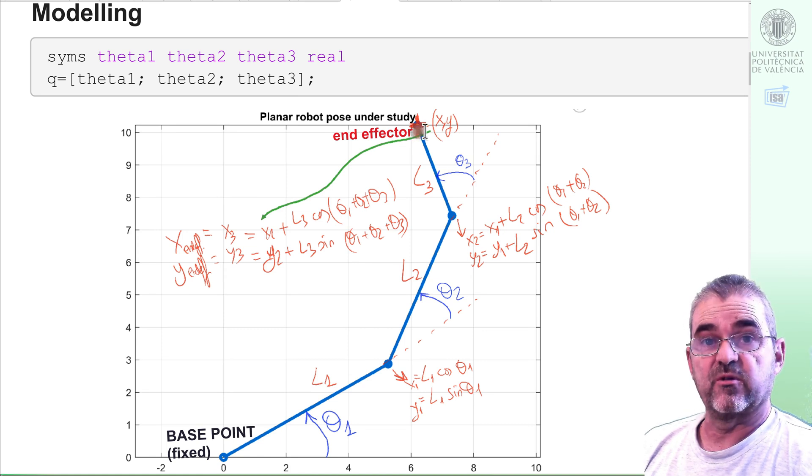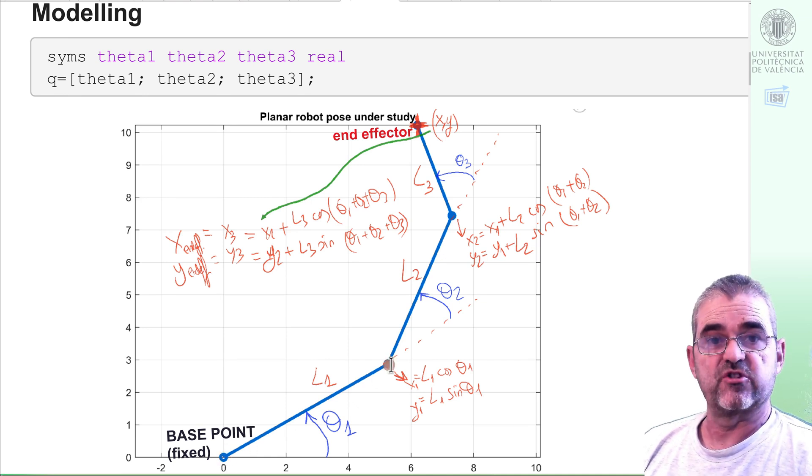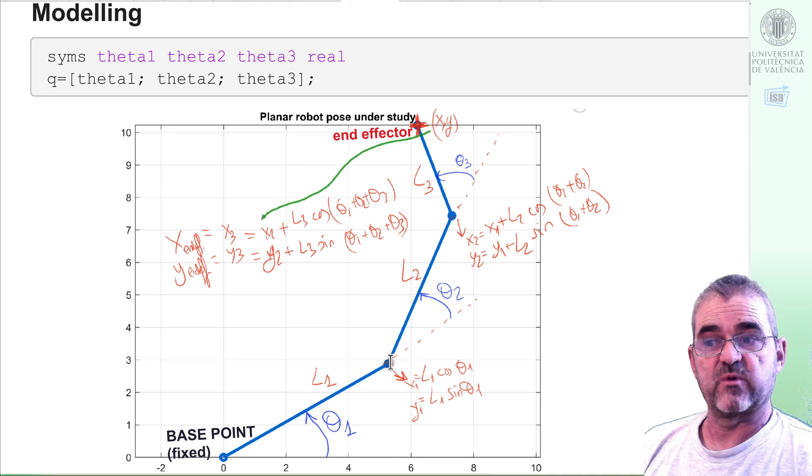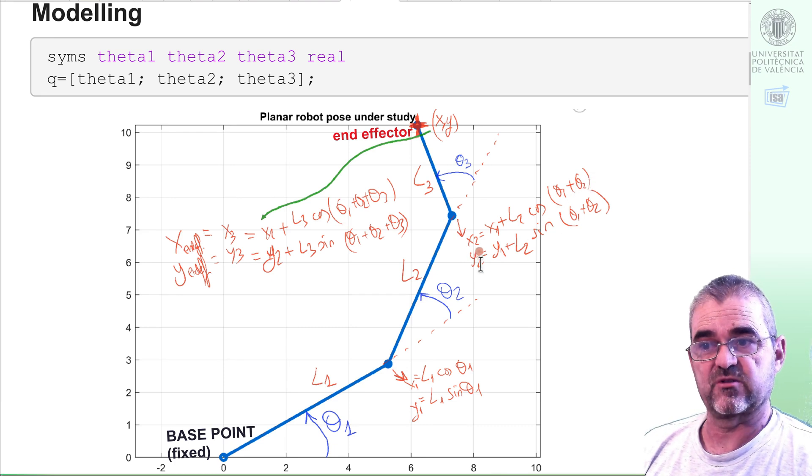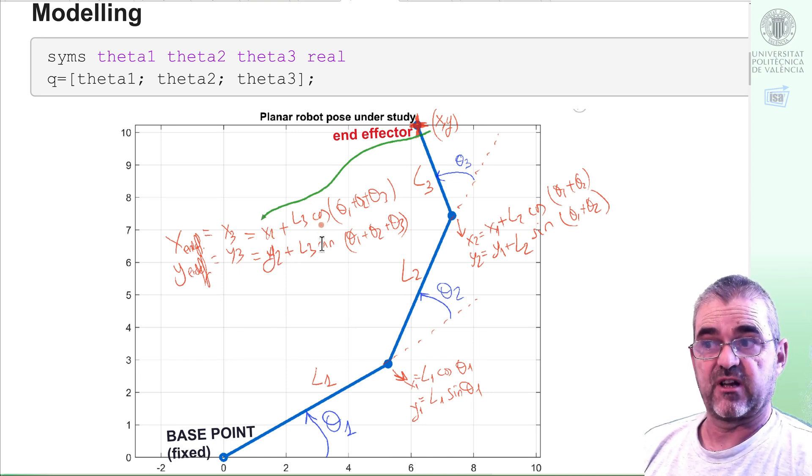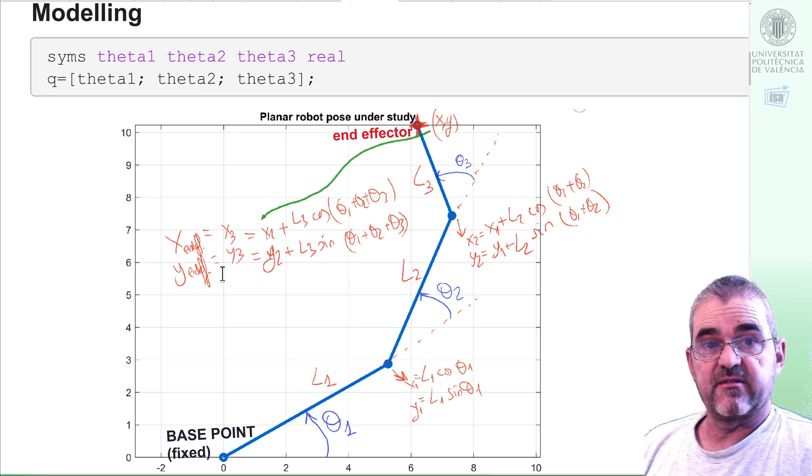Once we have this statement on what we want to do with this three-link robot, if we start with the first articulation at the origin, then this joint here will be at l1*cos(theta1) and l1*sin(theta1). Then the articulation here will be at position x1,y1 plus l2*sin and cos of its orientation, which is theta1 plus theta2. Likewise, if I add to x2,y2 the terms l3*cos and sin of the orientation of the last link, then I obtain x3,y3, which is the position of my end effector. With this model, still no dynamics, no time derivatives, it's just trigonometry.